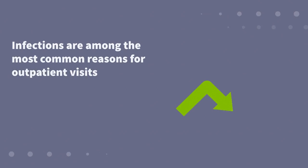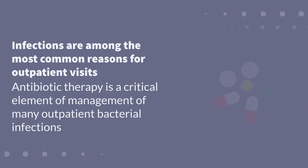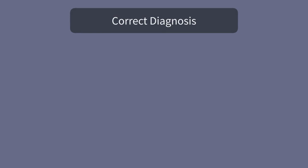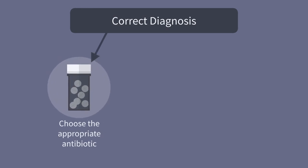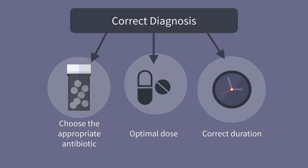Infections are among the most common reasons for outpatient visits, and antibiotic therapy is a critical element of management of many outpatient bacterial infections, such as community-acquired pneumonia, cellulitis, and acute cystitis. Having made a correct diagnosis of an infection for which antibiotics are indicated, the clinician must then choose the appropriate antibiotic and administer it in the optimal dose and for the correct duration.